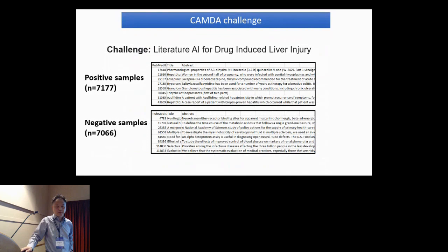This challenge, Literature AI for Drug-Induced Liver Injury, we downloaded the data from the CAMDA website. It's a very balanced dataset with 7,000 or so positive samples and negative samples. PubMed ID, title, and abstract are available. Positive means the papers are relevant to DILI - drug-induced liver injury - and negative means those papers are unlikely to be relevant to DILI. This is a classification problem. The curation was done by FDA drug experts.